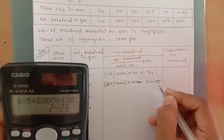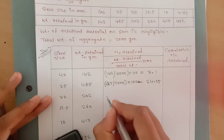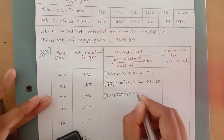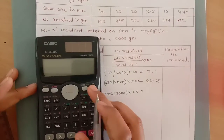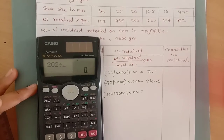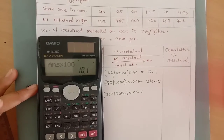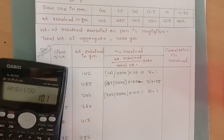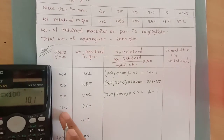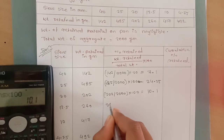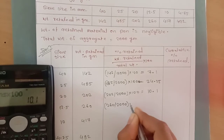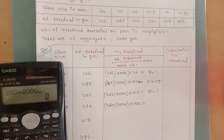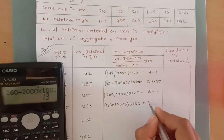For the 20 mm sieve, weight retained is 202 divided by 2000 multiplied by 100, so the answer is 10.1. For the 12.5 mm sieve, weight retained is 260 divided by 2000 multiplied by 100, so the answer is 13.